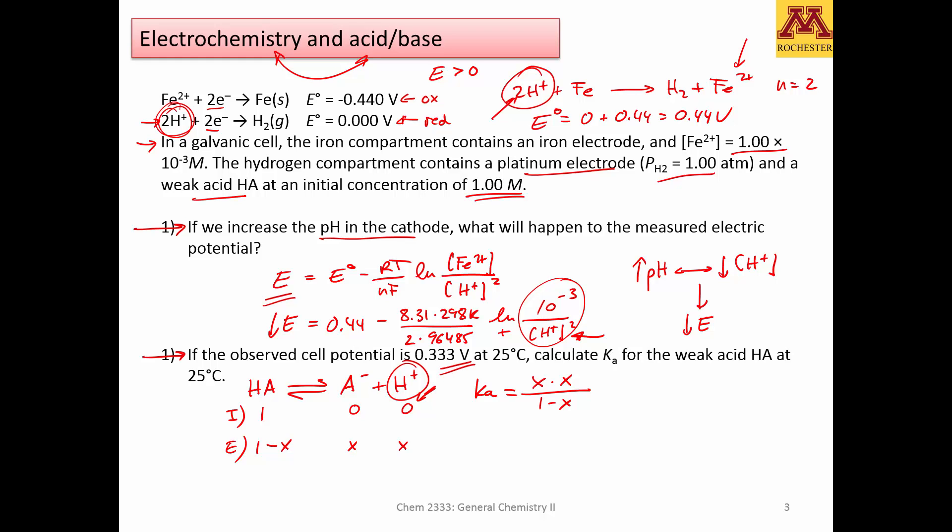We have not used this value, so we measure 0.333 volts. 0.44 minus 8.31 times 298 Kelvin divided by 2 electrons times 96,485 Coulombs per mole of electrons. I'm not including units, you should, but I don't have room here. And the concentration of iron is still 10 to the negative 3. And x, I'm going to put it x squared here because x is my concentration of hydronium. If I solve for x here, one just needs to plug it in here and can calculate the equilibrium constant.